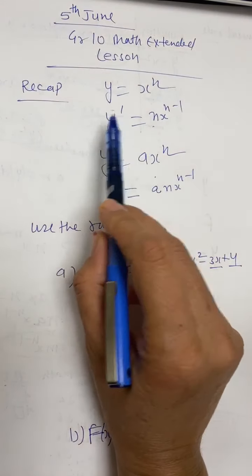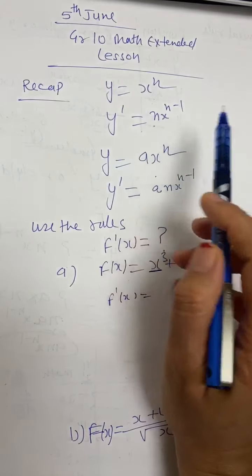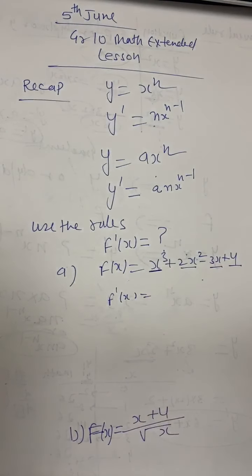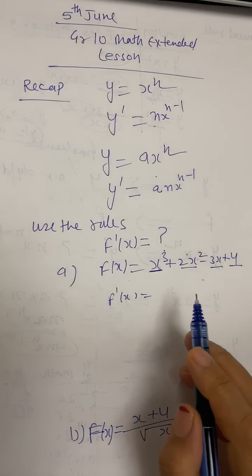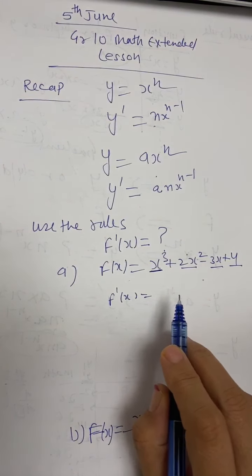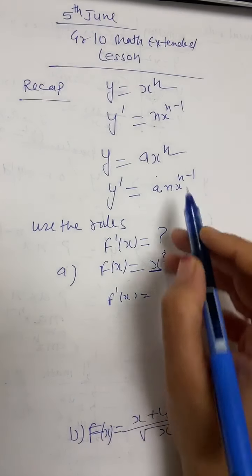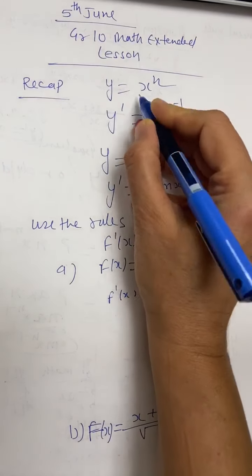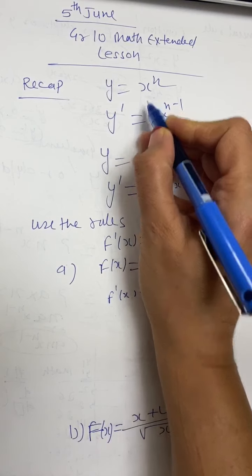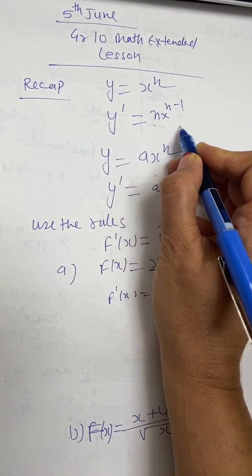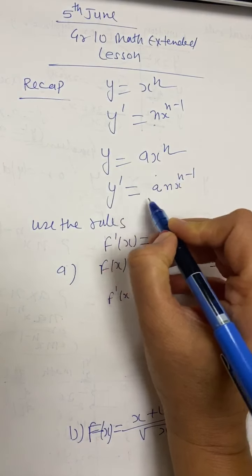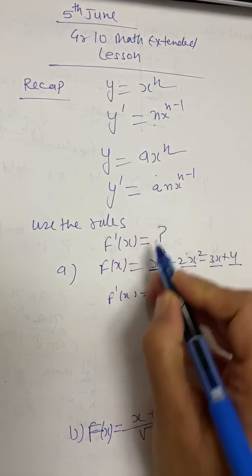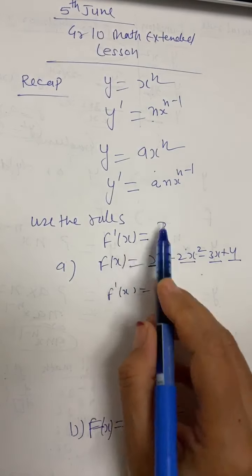In today's lesson I'm going to do more practice on using the rules which we learned in the previous lesson, and I'm also going to introduce a new concept: finding the equation of the tangent. These are the rules which we already know: if y equals x to the power of n, then y prime is n times x to the power of n minus 1; and if y equals a times x to the power of n, then y prime is a times n times x to the power of n minus 1.